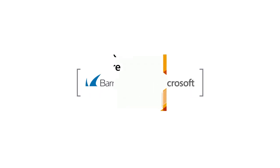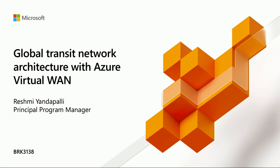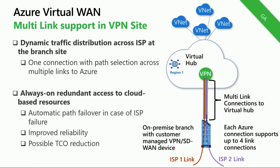What if you could do path selection from the device into Azure? So if one ISP link fails, it just magically fails over. All of that information of links is now extracted through the VPN site APIs, which our partners use to upload their branch information to us. On the Azure side, you will now be able to see the link information, and then the magic happens at the branch where the branch partner can basically do path selection across these links.